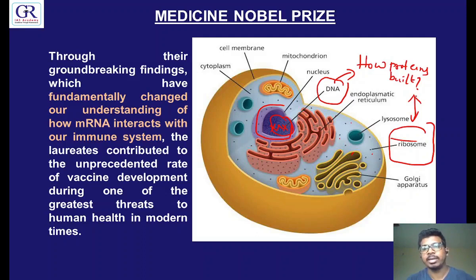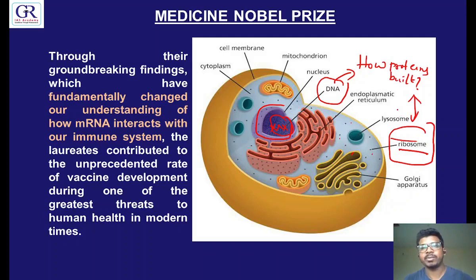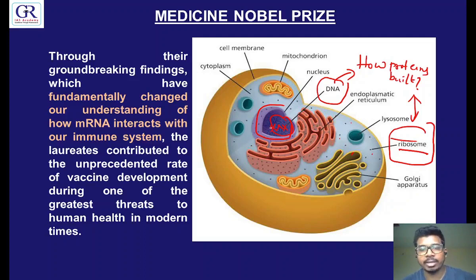Ribosomes need to produce protein because proteins are the basic building blocks of the body. Our muscles and our whole body are made of protein. We cannot live without protein, so ribosomes should manufacture protein. In order to manufacture protein, the ribosome needs information from DNA. How is this information from DNA carried to the ribosome? It is through the help of mRNA. Why is it called mRNA? Because it acts as a carrier or messenger — that M of 'messenger' is attached to RNA, and it is called mRNA. RNA is ribonucleic acid. The RNA takes the information from DNA and delivers it to the ribosome.